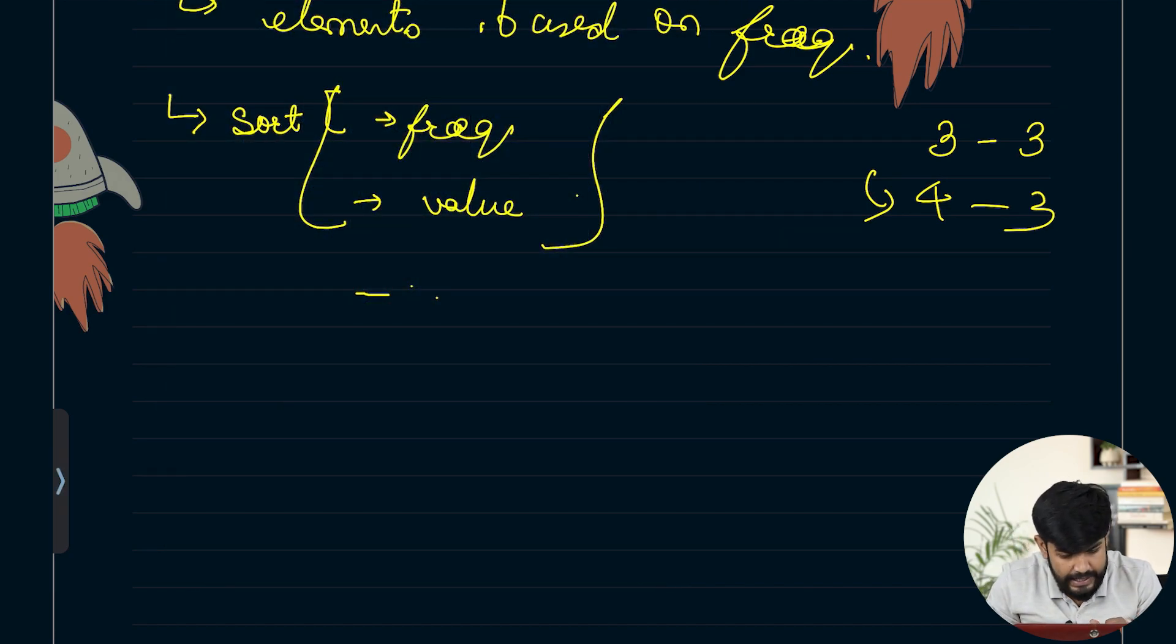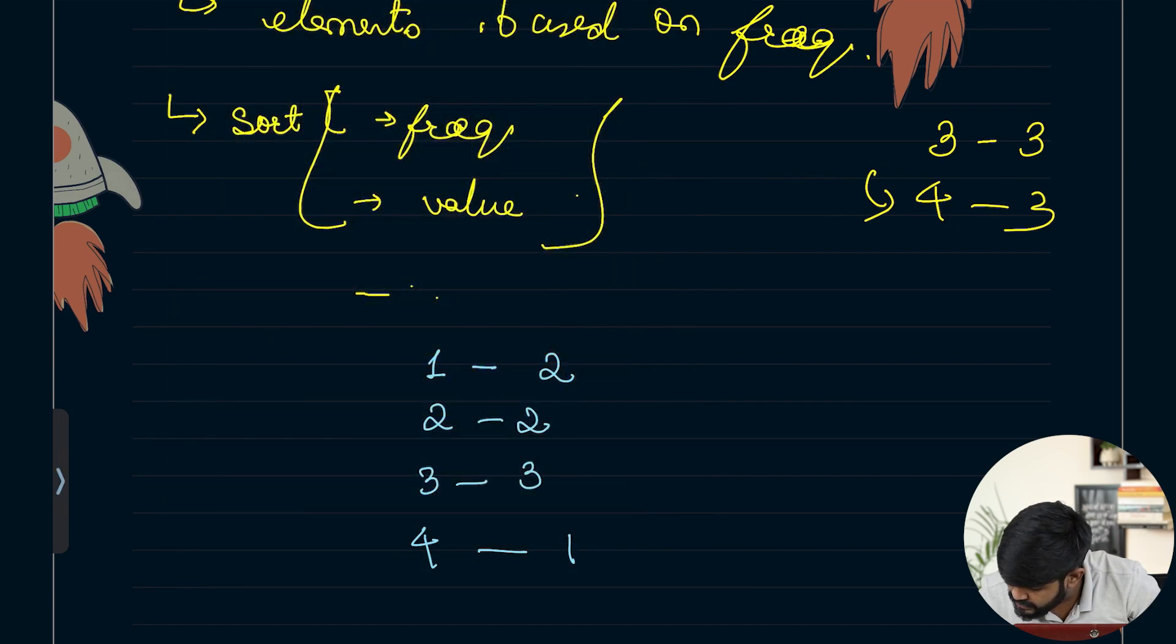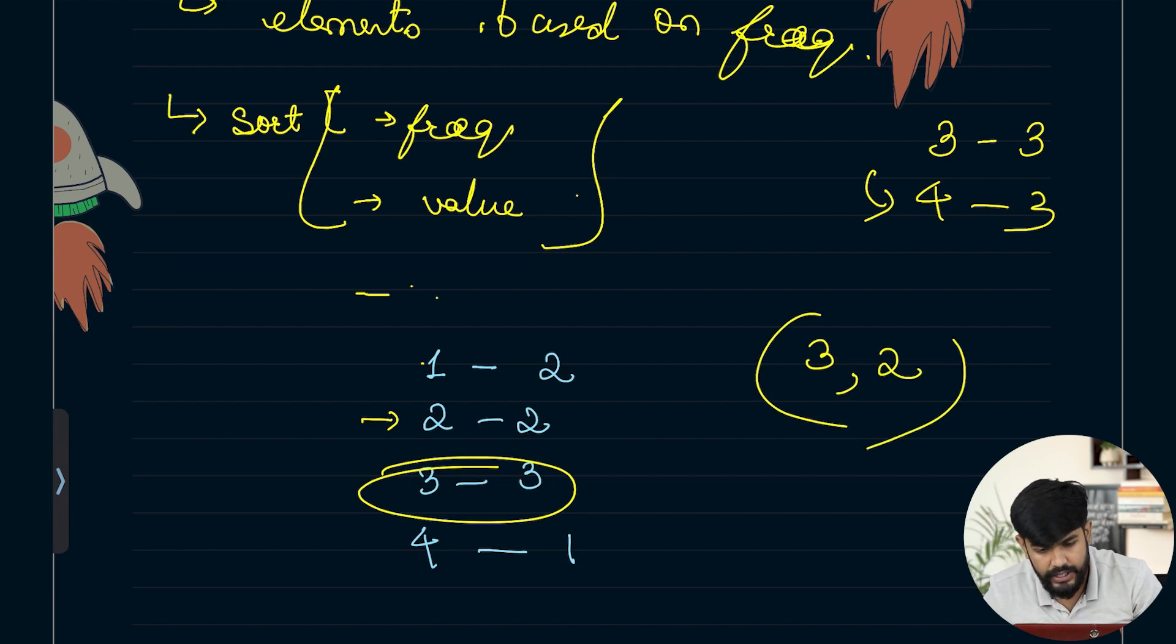Let's talk about the second sample test case. Here 1 has appeared 2 times, 2 has appeared 2 times, 3 has appeared 3 times, and 4 has appeared once. So the top 2 elements would be first 3, and the next top element is both 1 and 2. But we would prioritize 2. So we want 2 also. This is what we want. But how to basically do this?